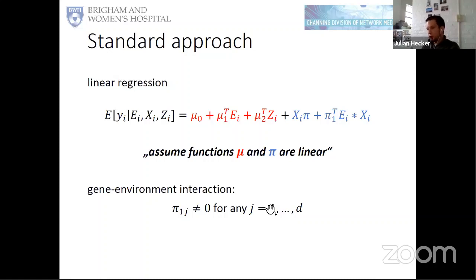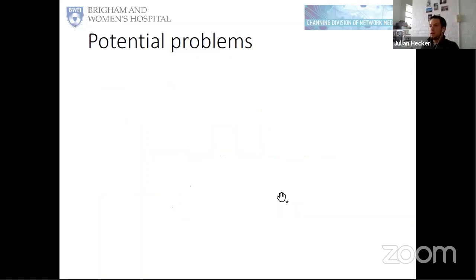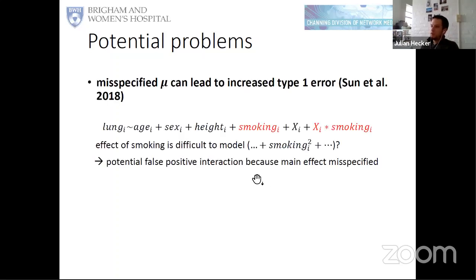If you have more than one environmental factor — if the dimension d of the environment is above one — this is a test that consists of different components, testing that at least one of them is non-zero. There are potential problems with this approach. The first problem is that if we misspecify the main environmental effect, this could lead to an increased type 1 error. This has been described in the literature multiple times. For example, if you look at lung function as a phenotype, most people would include age, sex, height, and smoking information in the model.